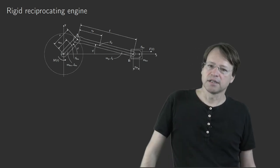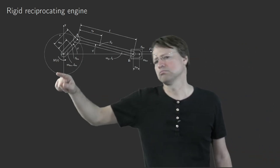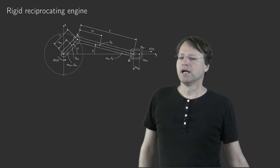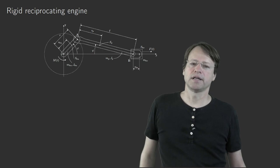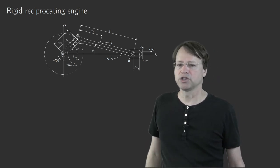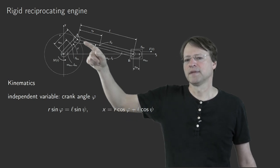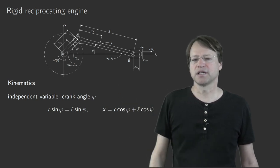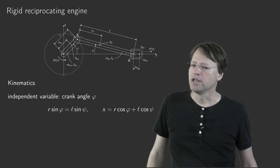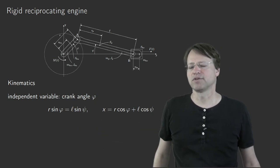Considering the kinematics, this mechanism has one degree of freedom. The crank angle is taken as the degree of freedom, since controlling the crank rotation determines all other motions. The analysis is based on the crank angle as the independent variable. The first kinematic relationship is obtained by equating the height in the triangle from both sides: R sin(φ) equals L sin(ψ), giving a simple relation between sin(ψ) and the crank angle φ.